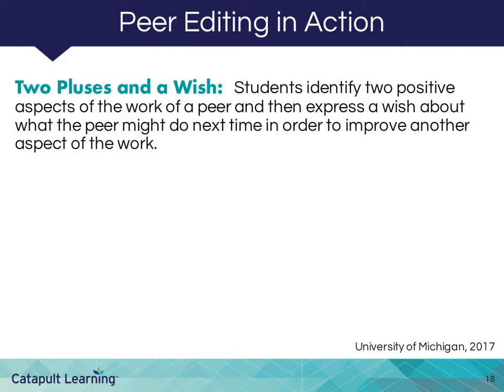Students identify two positive aspects of the work of a peer and then express a wish about what their peer might do next time in order to improve another aspect of their work. As with all other strategy instruction, teachers model this several times using samples of student work before asking the students to use the strategy in pairs.